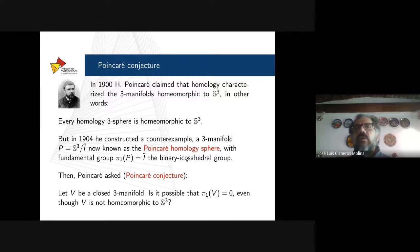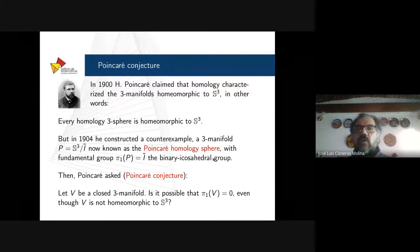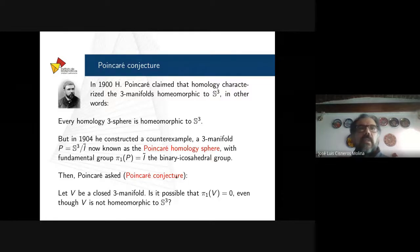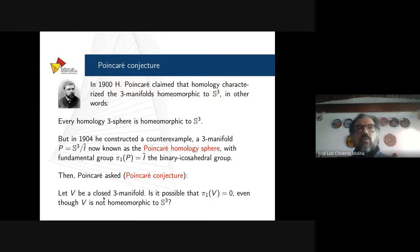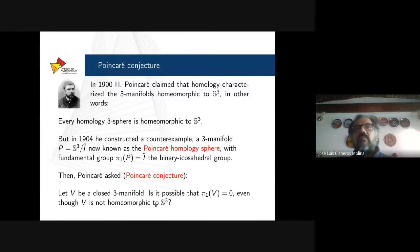It is called the binary icosahedral group because it projects into the group of rotations of the icosahedron in Euclidean three-space. Then Poincaré asked, in the famous Poincaré conjecture, whether a closed three-manifold with trivial fundamental group must be homeomorphic to S3.